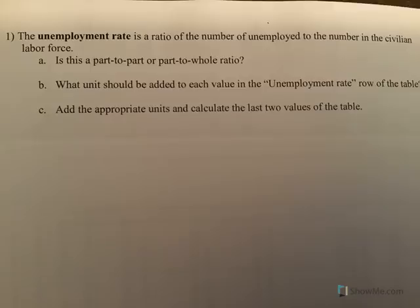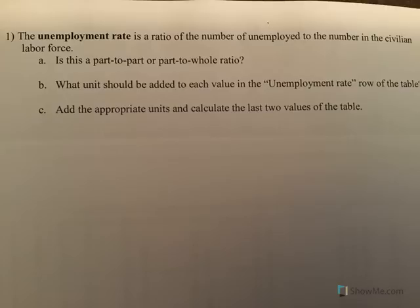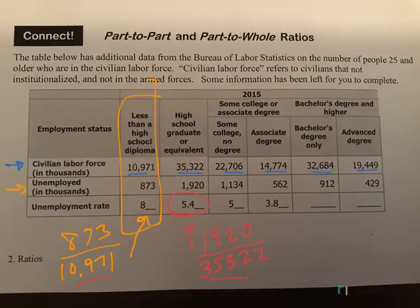The unemployment rate is a ratio of the number of unemployed to the number of civilians in the labor force, which is what we just showed — these are the fractions. But is this part-to-part or part-to-whole? The answer is part-to-whole, because these numbers represent the total for that group. So even though we're not talking about the total of the entire labor force, we're still talking about part-to-whole in that particular area.